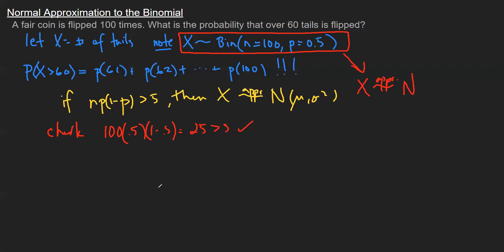The parameters of the normal distribution are mu and sigma squared, the mean and variance. And since the original distribution is binomial, I'll recall that the mean is n times p, and the variance is n times p times 1 minus p.